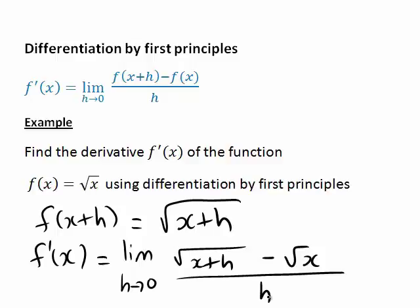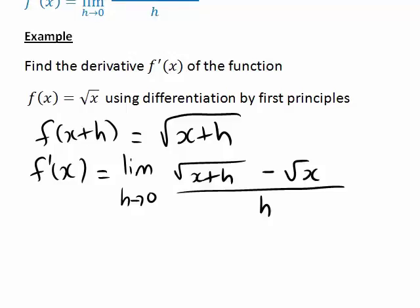At this stage, in this form, evaluating this limit will not work, so we need to simplify this in some way. It doesn't look immediately obvious how. Really, the only part that looks like we might have any hope of simplifying, or rewriting in some useful form, is this bit here: square root of x plus h minus square root of x.